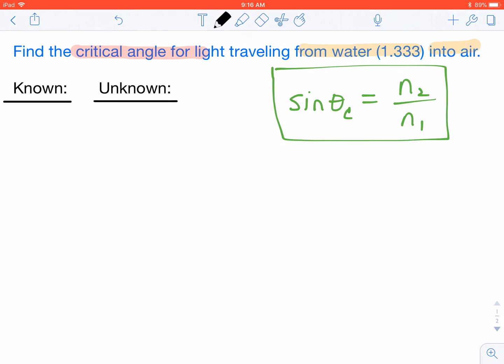As we said, we know two things. We're traveling from water into air. Water is our first substance, so N1 is 1.333. Air is our second substance, so N2 becomes 1.0 because air is always 1.0.